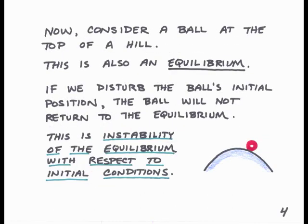Now we'll consider the case of a ball at the top of a hill. If it's at the very top and it's not disturbed, it will stay there — there will be no force to move it away, so this is also an equilibrium. If we disturb the initial position of the ball and move it slightly away from the top, the ball will not return to the top of the hill. It will roll down, so it doesn't return back to its equilibrium. So this is an instability of the equilibrium with respect to initial conditions.